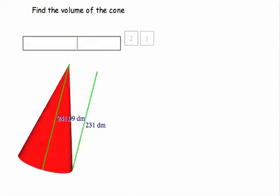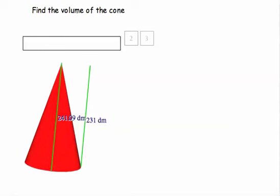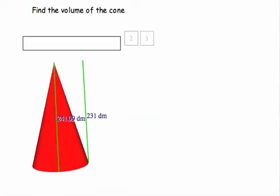Okay, and we can see the slant height here. And if we rotate it, we can also see the height. So the height of the cone is 231 decimeters. And there we go. So that's all the information we need to find the volume.